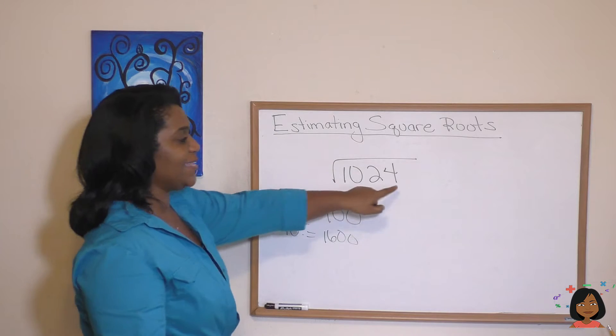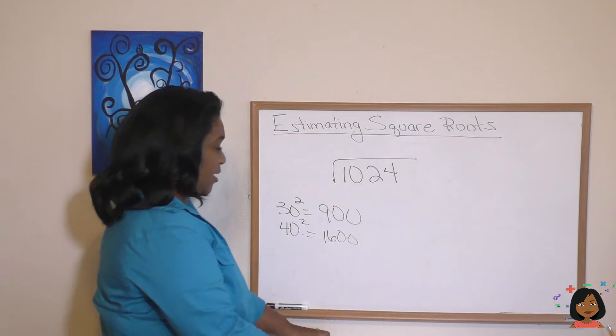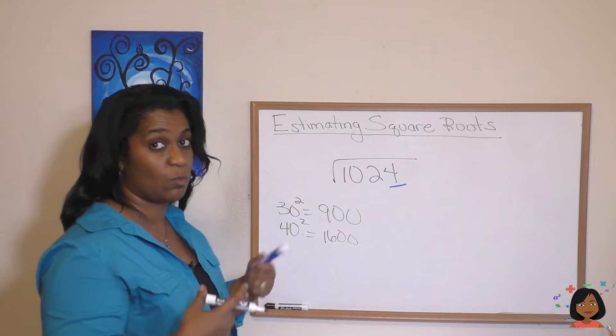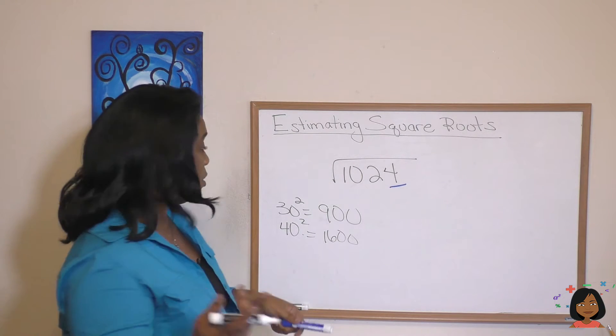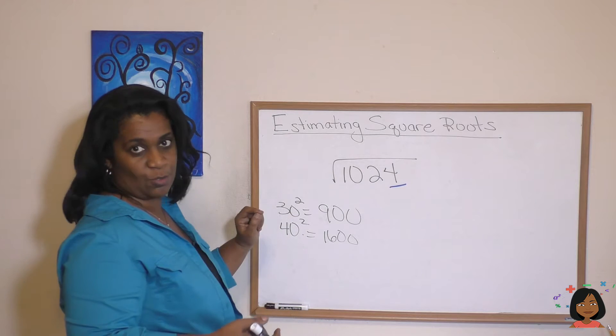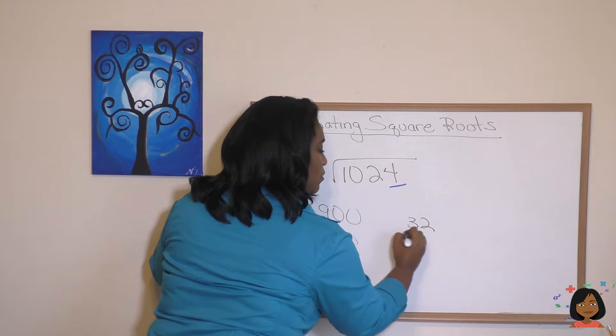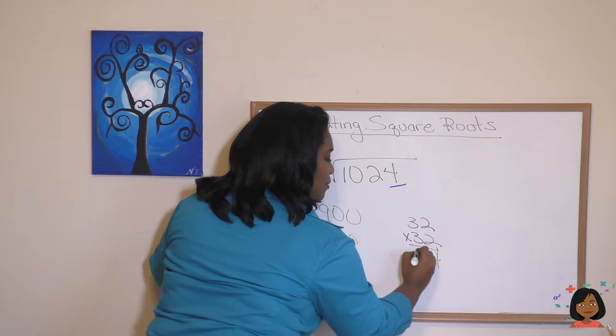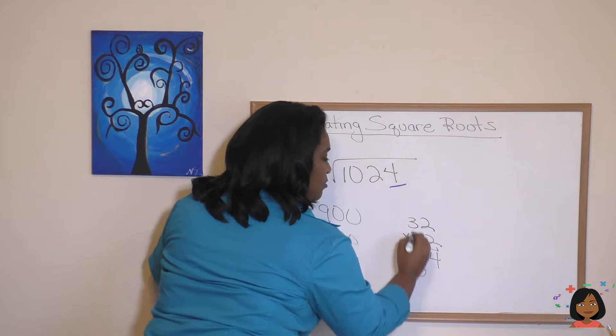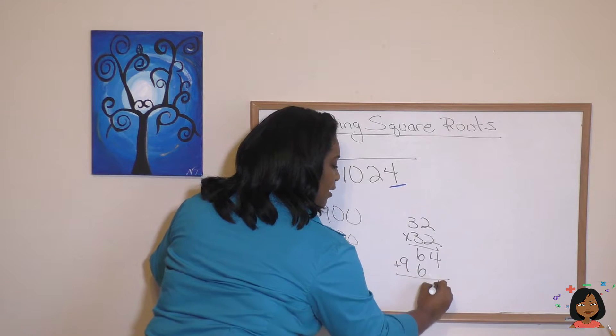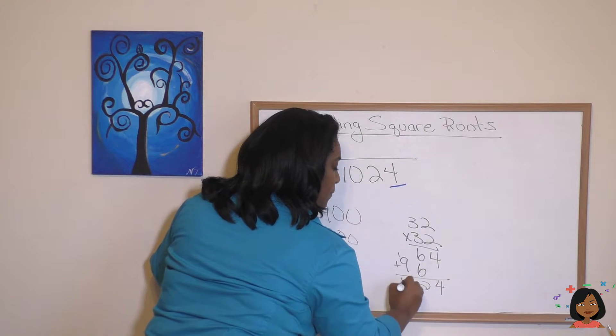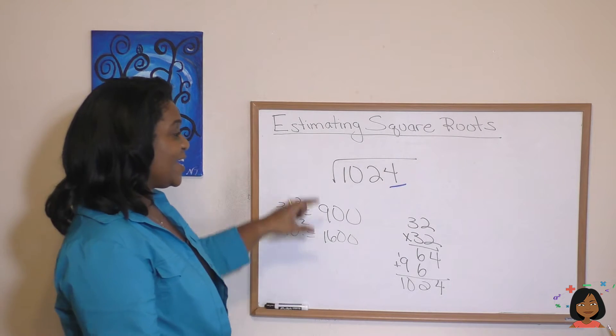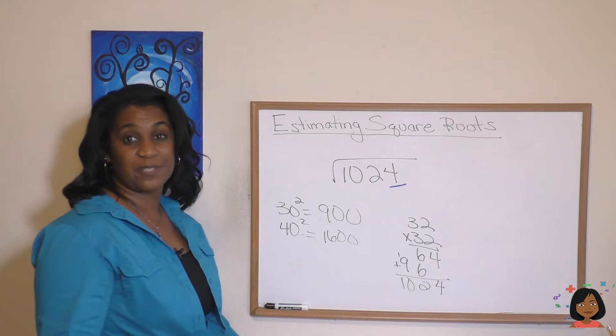And it ends in a 4, which means the two numbers that I multiply have to end in a 4. So it could be 2 times 2. So why don't we try 32 times 32? 2 times 2 is 4. 3 times 2 is 6. 3 times 2 is 6. 3 times 3 is 9. Boom. There you go, 1024. Again, estimating, trying to get close to the number seemed to help us here.